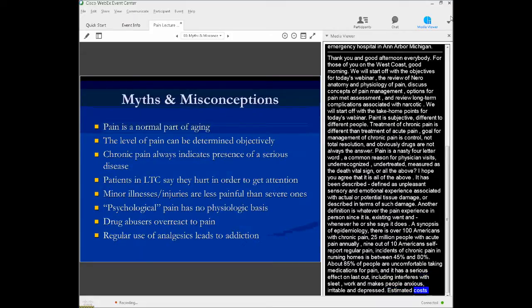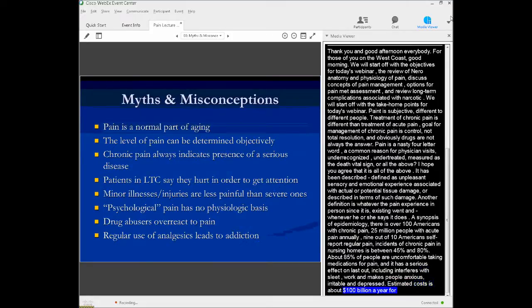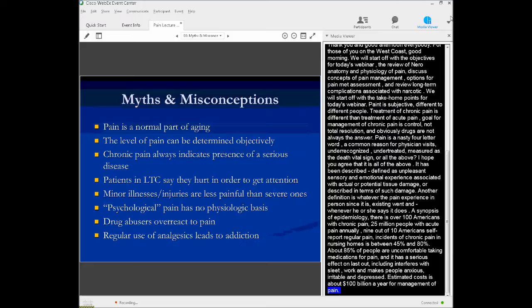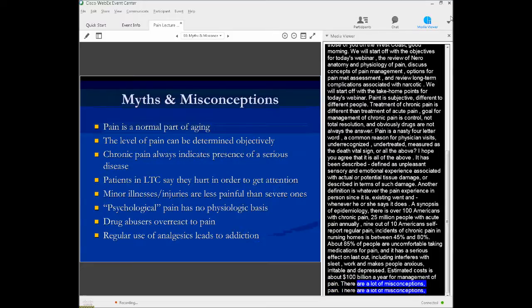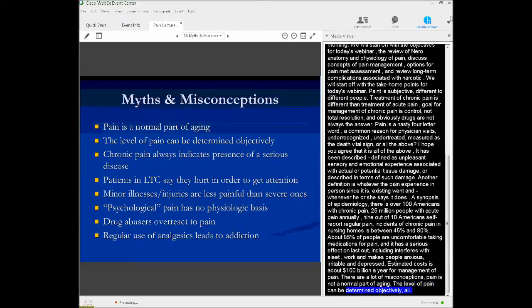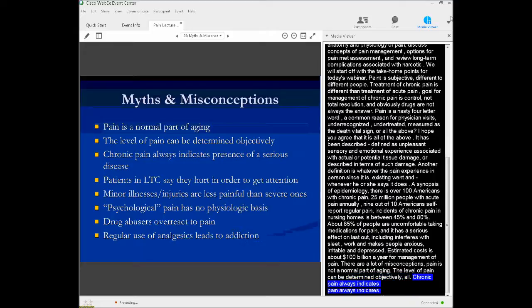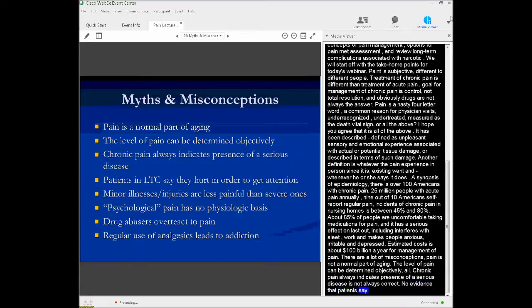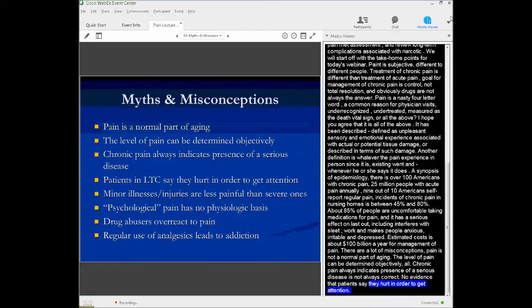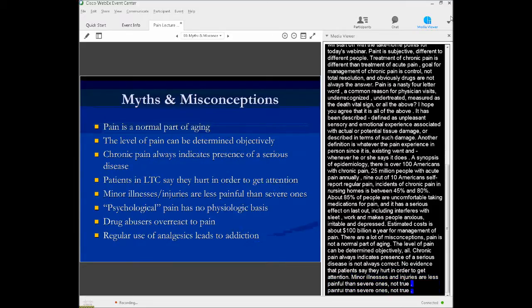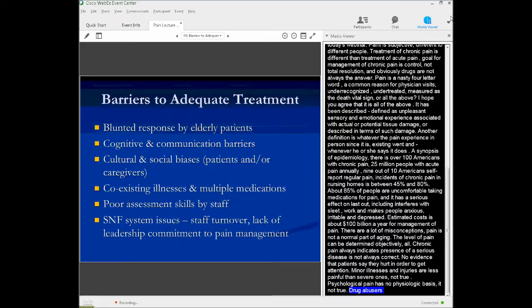A lot of myths and misconceptions about pain. Pain is a normal part of aging - that's not true. The level of pain could be determined objectively - that is false. Chronic pain always indicates presence of serious disease - that isn't always correct. Patients in long-term care say they hurt in order to get attention - no solid evidence of that. Minor illness and injuries are less painful than severe ones - not true. Psychological pain has no physiological basis - also not true. Drug abusers overreact to pain - no solid evidence for that. Regular use of analgesia can lead to addiction. So all of these are common myths and misconceptions about pain.